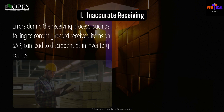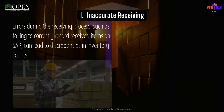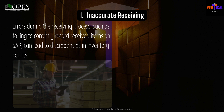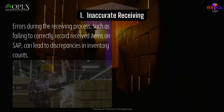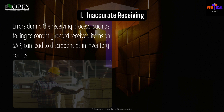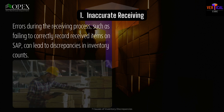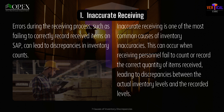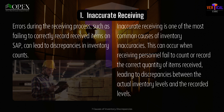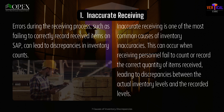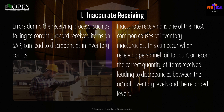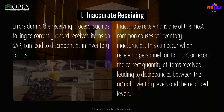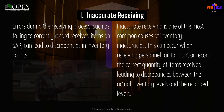1. Inaccurate receiving. Errors during the receiving process, such as failing to correctly record received items on SAP, can lead to discrepancies in inventory counts. Inaccurate receiving is one of the most common causes of inventory inaccuracies. This can occur when receiving personnel fail to count or record the correct quantity of items received, leading to discrepancies between the actual inventory levels and the recorded levels.